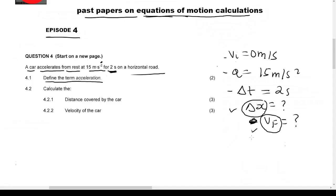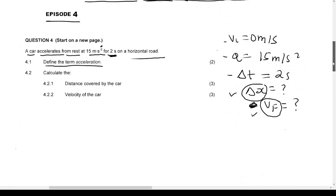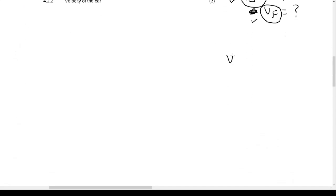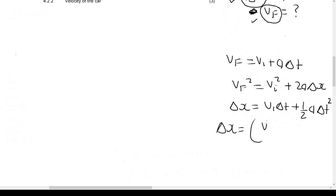Let's write down the equations of motion and then answer your questions. V final equals V initial plus acceleration times delta t. V final squared equals V initial squared plus 2 times acceleration times delta x. Delta x equals V initial times delta t plus half acceleration times delta t squared.